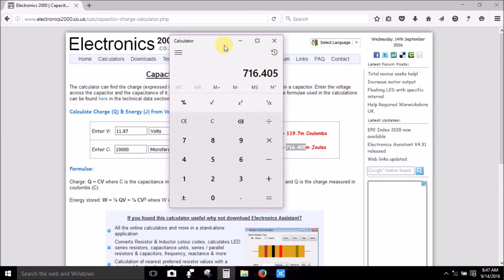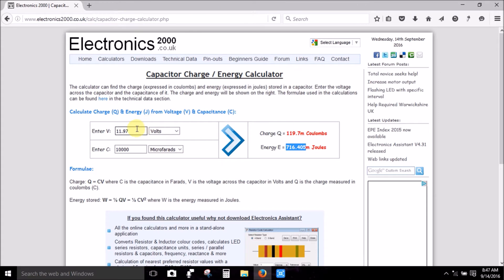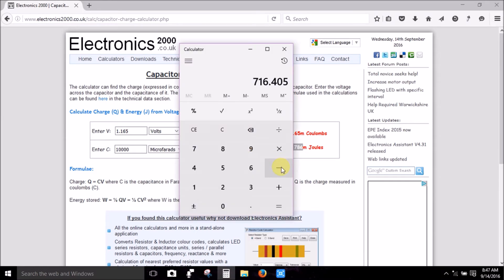Okay, so now we ended up dropping this voltage down from 11.97 to 1.165 volts at 10,000 microfarads, so we ended up with the energy in that capacitor at 6.786 millijoules. So what we're going to do is we're going to copy that, we're going to go to our calculator and we subtract what we ended up with there.